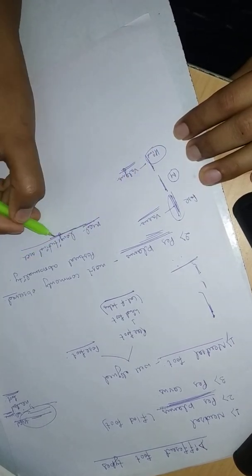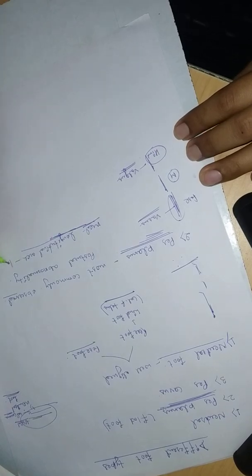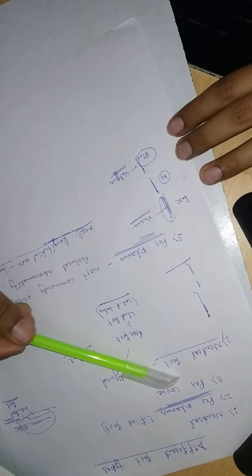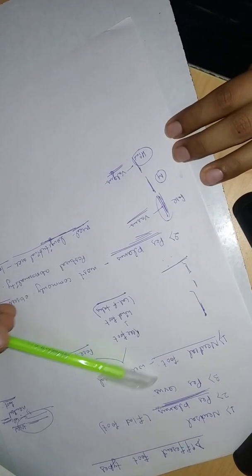Pes Planus is for the medial longitudinal arch. When the medial longitudinal arch is low, it has indicated the low arch.